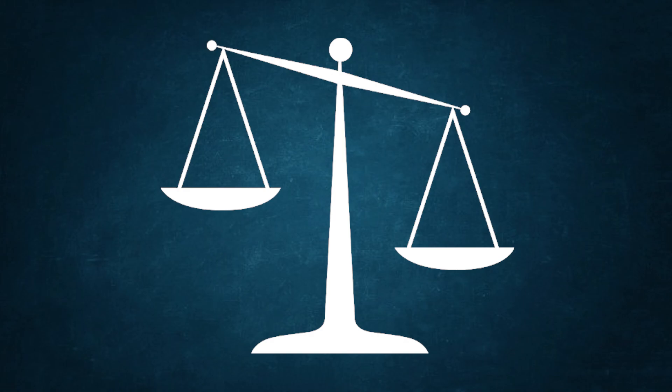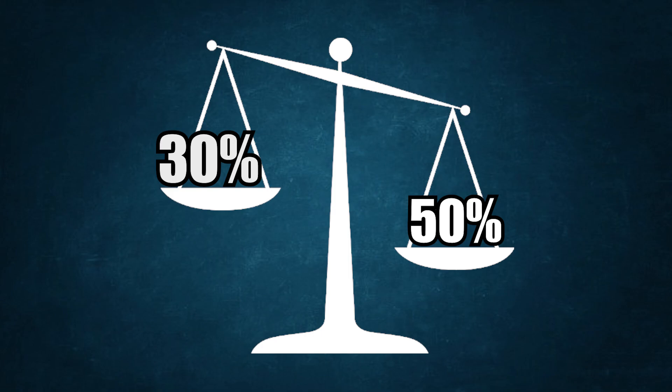If a teacher decides to weigh exams as 50% of a student's grade, and another teacher decides it should only be 30, then the impact of an assignment can therefore mean more for a student and less for another.